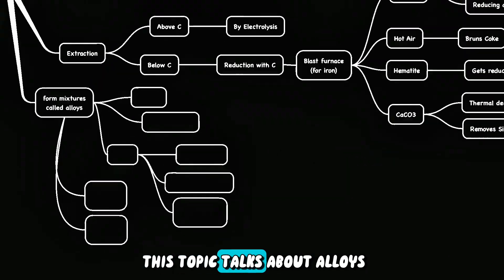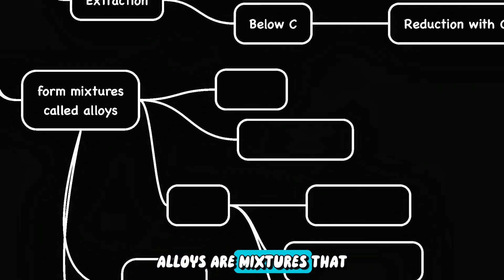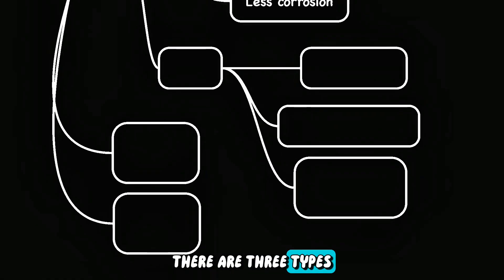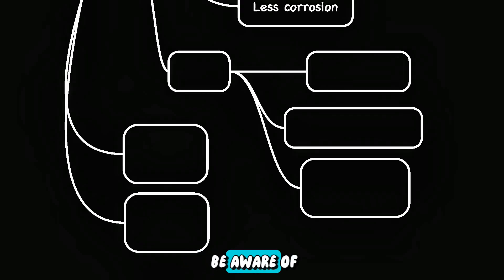The last part of this topic talks about alloys. Alloys are mixtures that are meant to make metals harder and reduce their chance of corrosion. There are three types of alloys that you need to be aware of. First, it is steel. Second is brass, and last is bronze.